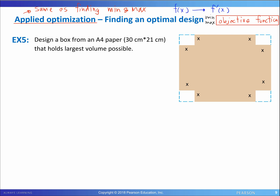Now let's take a look at this example. Here we are supposed to design a box from an A4 paper — so there's our scenario. The dimensions for an A4 paper are 30 centimeters by 21 centimeters. The longer side is 30 centimeters and the shorter side is 21 centimeters.